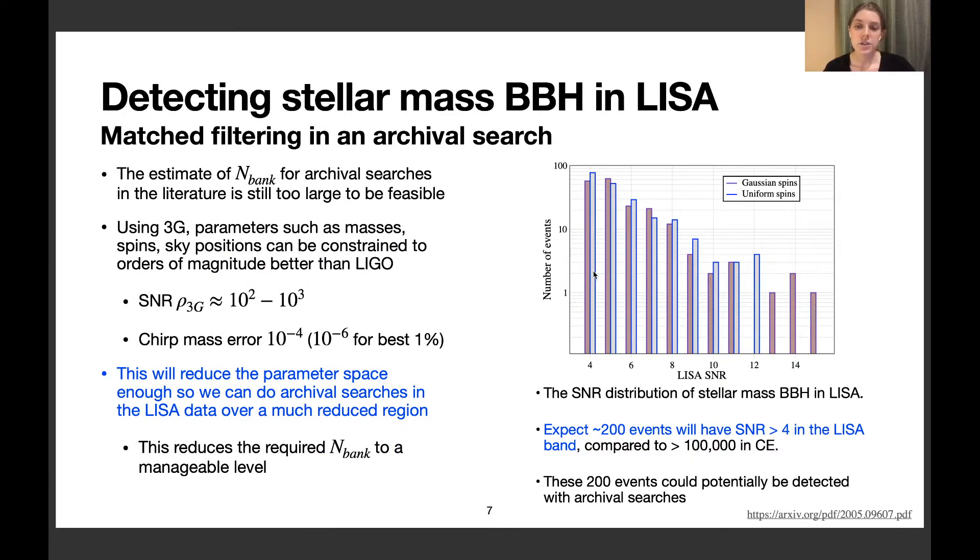This slide shows a plot of the distribution of the number of events detectable by LISA every year at different SNRs. If we can reduce the template bank size to a small number, we expect to observe sources in LISA down to SNR 4. Summing up all events with SNR greater than 4, we find a population of about 200 events observable in LISA and 3G detectors every year. These 200 events could potentially be detected using archival searches.